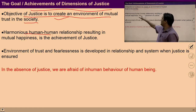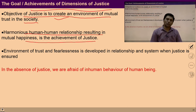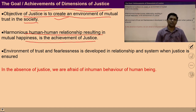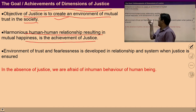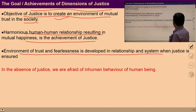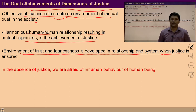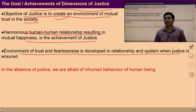The second objective is harmonious human-human relationship resulting in mutual happiness, which is the achievement of justice. Harmonious relationship means ensuring mutual happiness with each other — this is an outcome of justice. So when we live with justice, it ensures mutual happiness as an outcome, and that is why justice is required in the society.